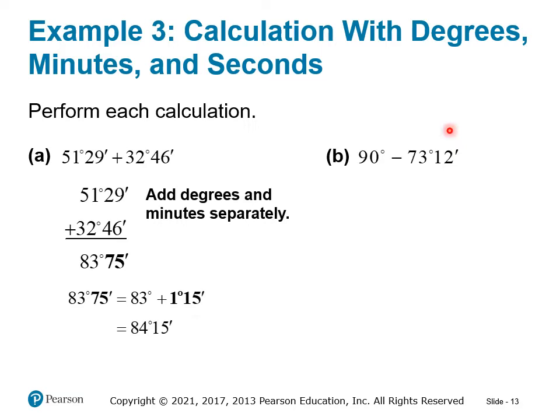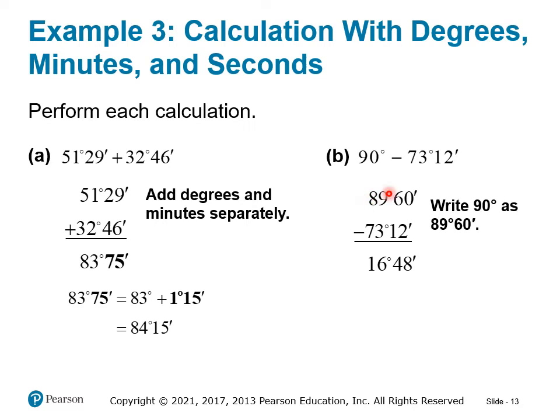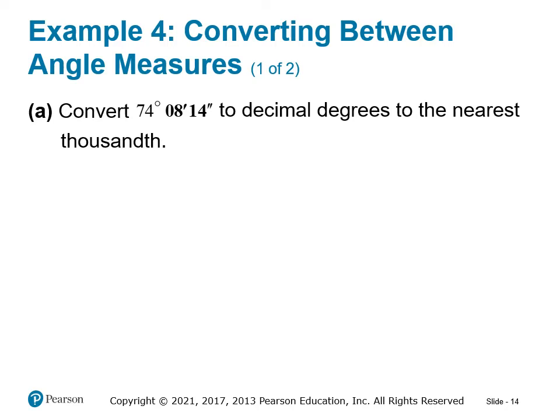For subtraction, we borrow when needed. Subtracting 73 degrees 12 minutes from 90 degrees: since 90 has no minutes, we borrow one degree and convert it to 60 minutes, making it 89 degrees 60 minutes. Then 89 minus 73 gives 16 degrees, and 60 minus 12 gives 48 minutes. The minutes are not negative and not over 60, so the final answer is 16 degrees, 48 minutes.